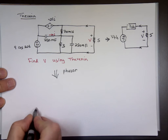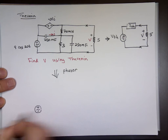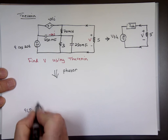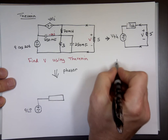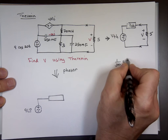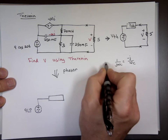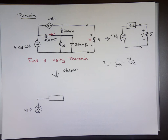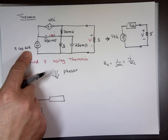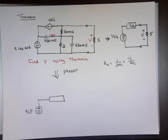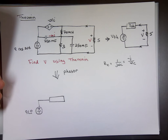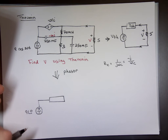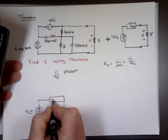The source becomes 9∠0°. Remember the capacitor impedance is 1/(jωC), or equivalently −j/(ωC). Here ω is 20 and C is 250 millifarads, so the impedance is 1/(20 × 0.25), which gives −0.2j.